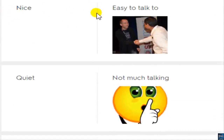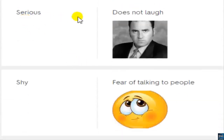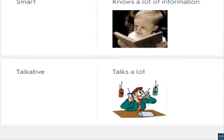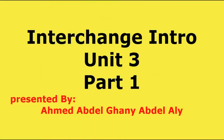'Nice' means easy to talk to. 'Quiet' means not much talking — we can also say 'speaking'; the G can be silent. 'Serious' means doesn't laugh. 'Shy' means fear of talking to people. 'Smart' means intelligent, knows a lot of information. 'Talkative' means talks a lot.